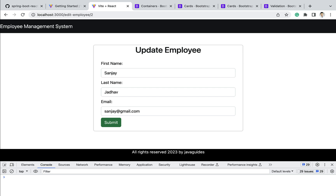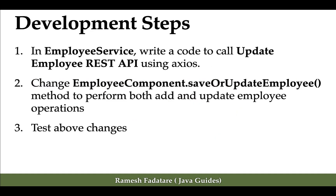Let us take a look at the development steps. First, in the Employee Service we need to write REST client code to call the Update Employee HTTP API using Axios. Next, we will change the Employee Component's save or update employee method to perform both add and update employee operations. And next we will test all these changes.